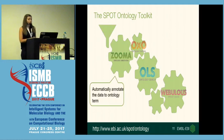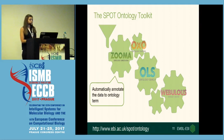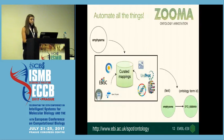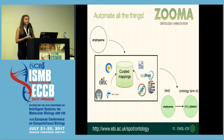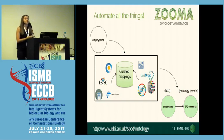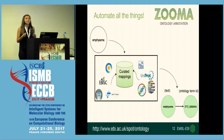The first tool we're going to look at is Zooma. Zooma helps you automatically annotate data to an ontology term. It is a database of curated mappings between text and ontology terms. What you do is give Zooma your text, and it gives you back an ontology term if it's seen this mapping before.